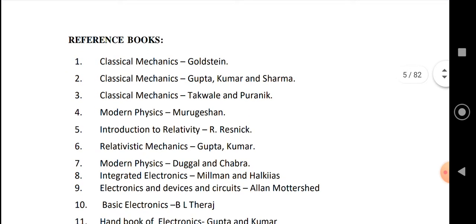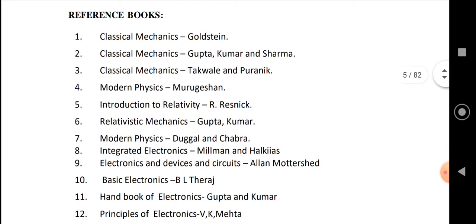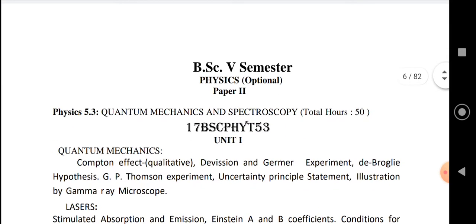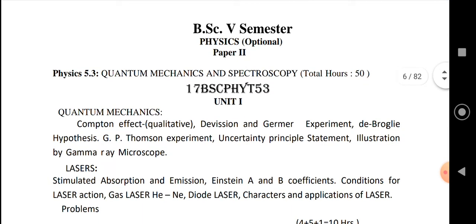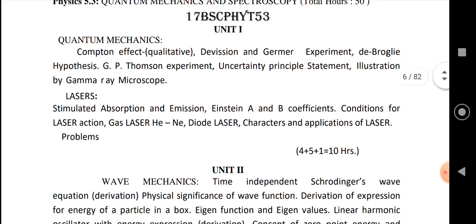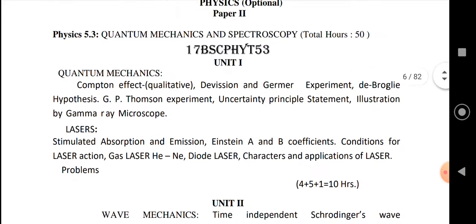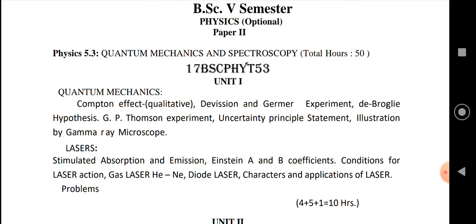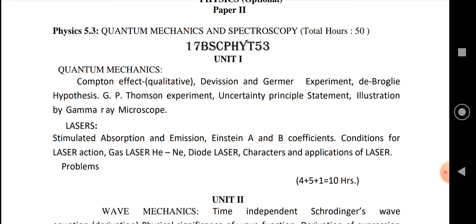These are all the reference books related to paper one — you can refer to these. Paper two includes the topics of quantum mechanics and spectroscopy, and also includes mathematical physics. There are again five units in paper two. In unit one: quantum mechanics and lasers — lasers actually comes under spectroscopy but has been included here.